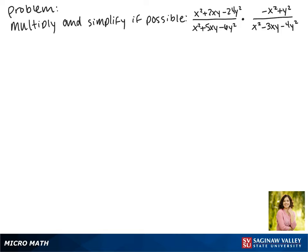Today we'll be multiplying and simplifying if possible the expression x squared plus 2xy minus 24y squared over x squared plus 5xy minus 6y squared, times negative x squared plus y squared over x squared minus 3xy minus 4y squared.